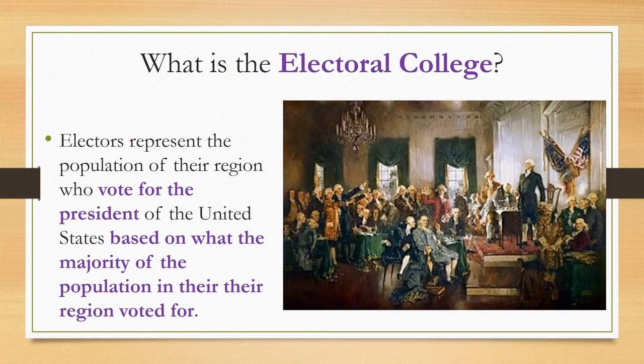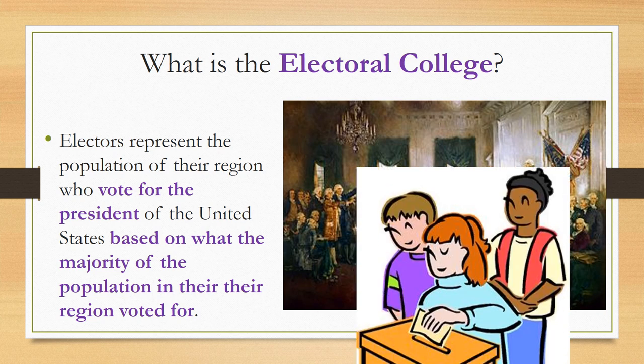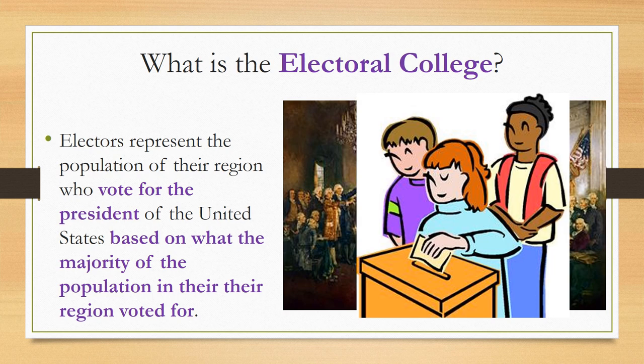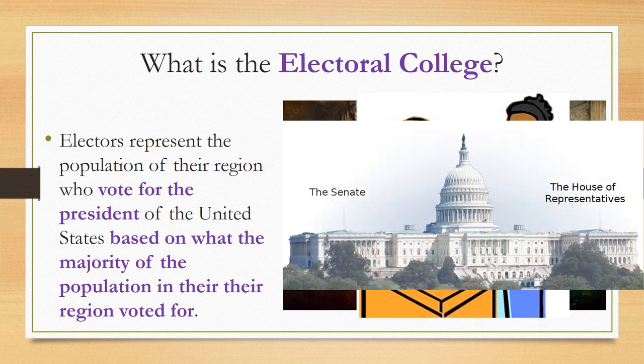In 1787, the delegates to the Constitutional Convention decided on this system of indirect election of the president. Long debates took place about how to make sure the best candidate would be chosen as president. Some delegates supported a direct election by citizens, others favored having Congress choose the president, and still others thought that state legislatures should make the choice. The delegates finally agreed on a compromise.